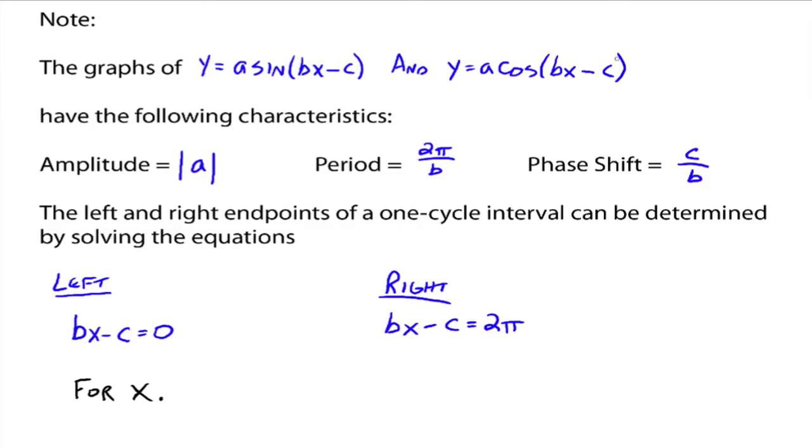So now what we're going to say is, we want bx minus c to start at 0. So bx minus c equals 0 would be where we would start on the left once you solve this equation for x. To figure out where the one-cycle is going to end, the right endpoint, then bx minus c has to equal 2 pi, and you solve this equation for x, and then that's where you're going to end your one-cycle. So these two equations will help you figure out where to start your one-cycle and where to end your one-cycle when you're sketching graphs that have the phase shifts.